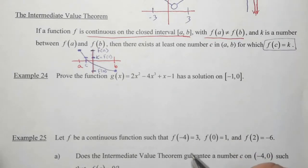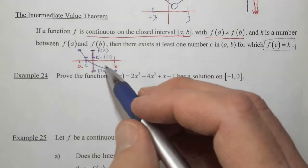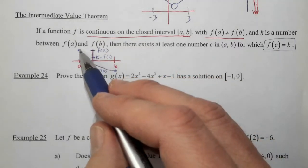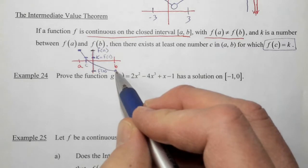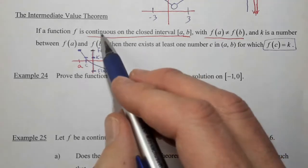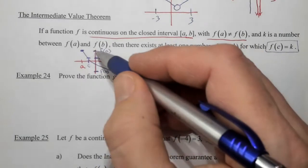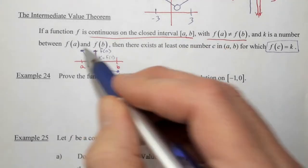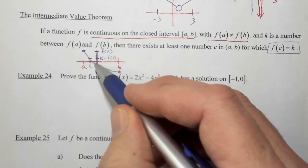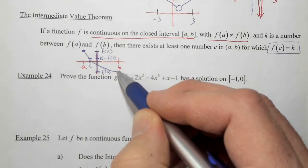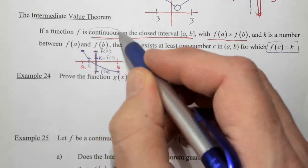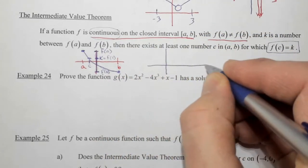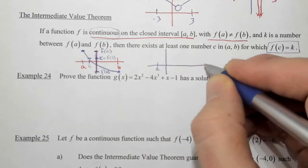In other words, let's put this in English. There is no way that we can get from this vertical value to that vertical value with a continuous function without hitting every single y value in between. I cannot get from here to there without hitting every y value in between because our function is continuous.